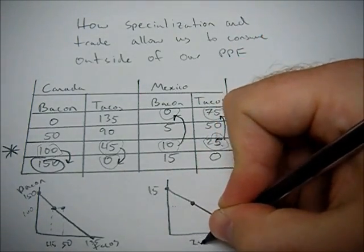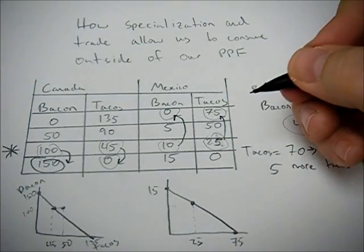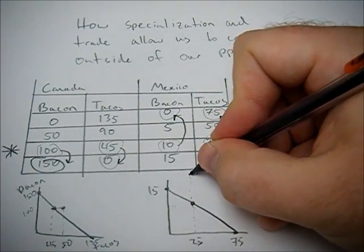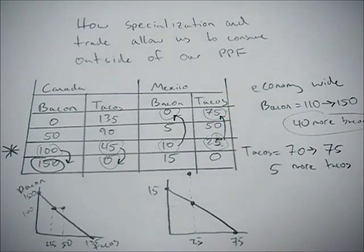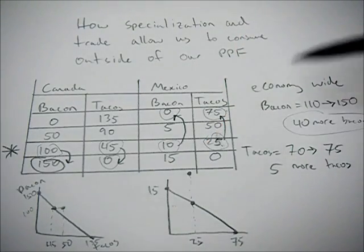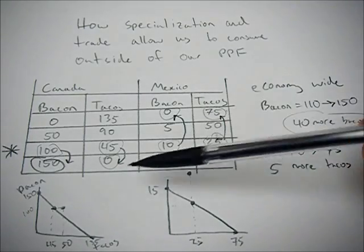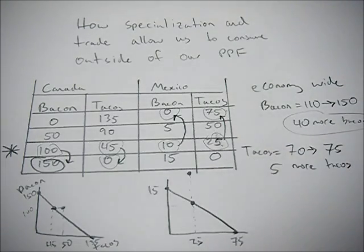So here, Mexico is still at 25, but now they're way up here with 50 bacon. So both of these countries, by specializing and trading, are able to move outside of their PPF, which they couldn't do before specializing and trading.